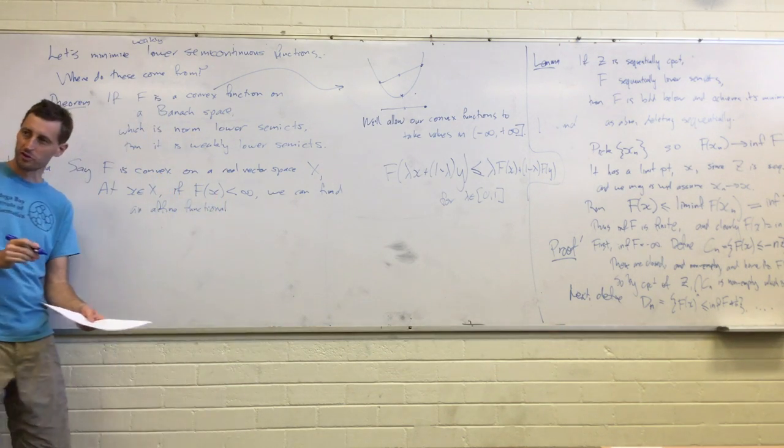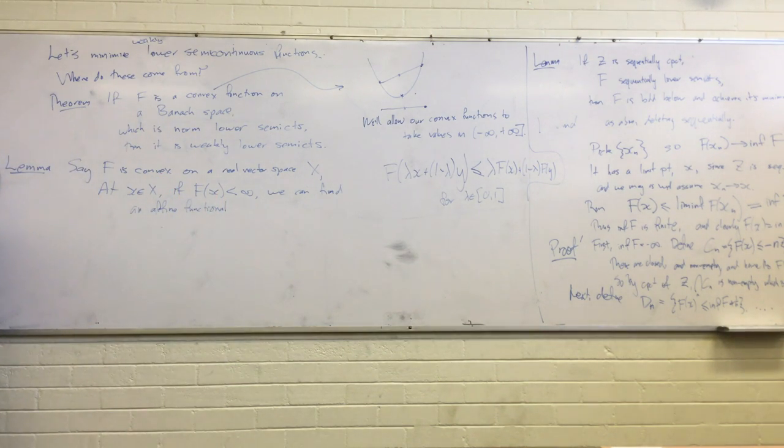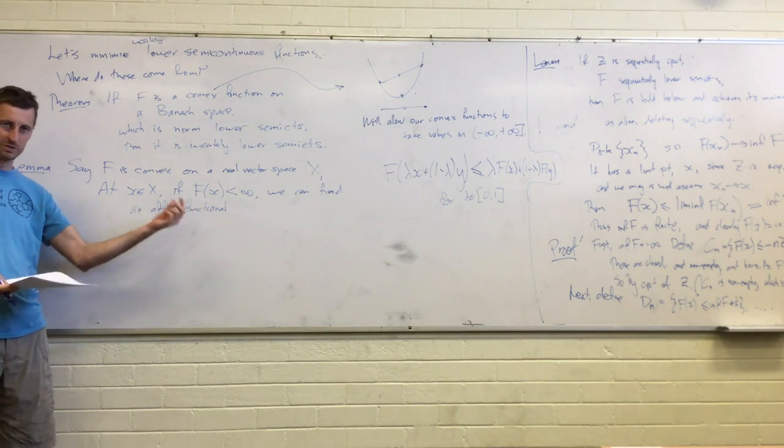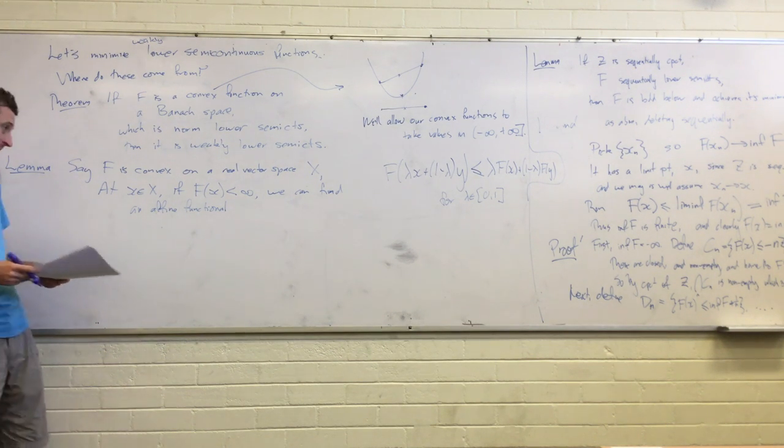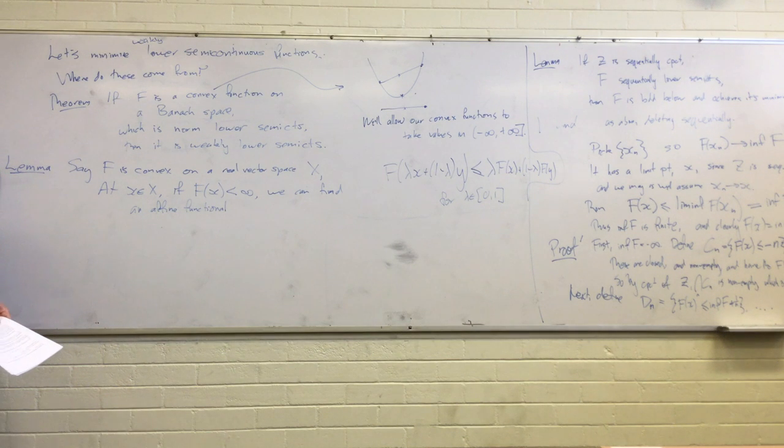What's an affine functional? A linear functional plus a constant. Yeah, exactly. It's a linear functional plus a constant, which is basically saying that there exists a constant such that everything minus that is linear. Maybe that's the best thing to do. Yeah. Okay. Or maybe we say it's the difference between two points.